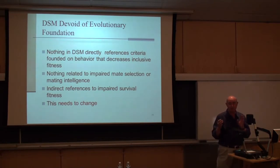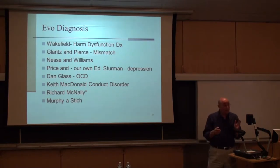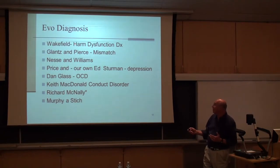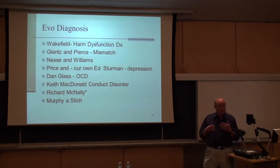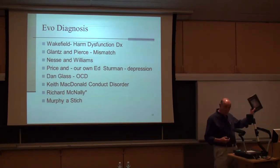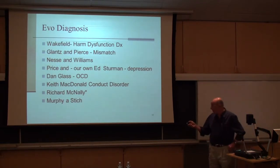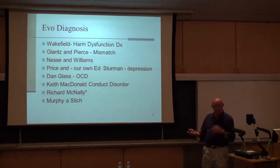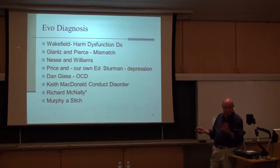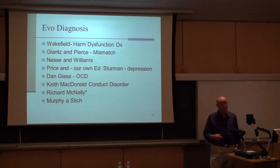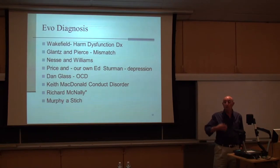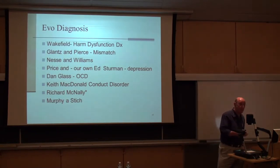Who contributes to a better evolutionary diagnostic system? We have Wakefield, whom I mentioned. We have Colman Glantz and Pearce Doma — Colman is right here in the audience. He wrote one of the most important books in the field, Exiles from Eden, which addresses mismatch theory in particular. There's also Nesse and Williams' Why We Get Sick, a more adaptationist approach. And Dan Glass — I read Dan's paper on obsessive-compulsive disorders, which I think has the potential to contribute to a better diagnostic system for that disorder in the DSM.